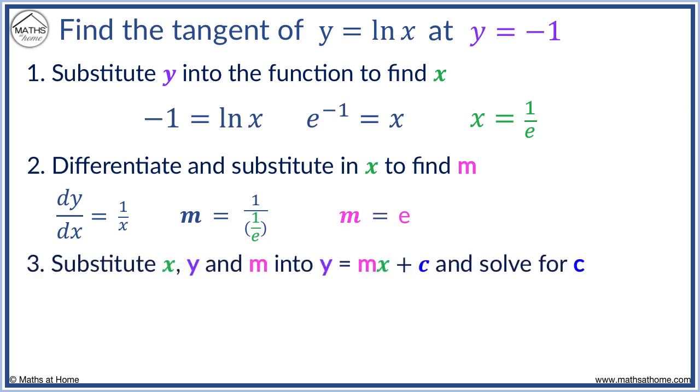Now we sub in x, y and m. y equals minus 1, m equals e, and x equals 1 over e. Now e and 1 over e cancel out so that e times 1 over e is just 1. Now c equals minus 2. y equals mx plus c becomes y equals ex minus 2.